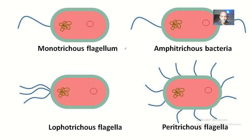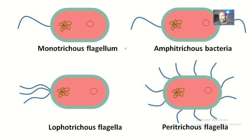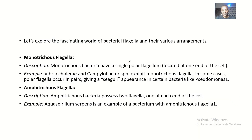We have the monotritus flagellum — bacteria having just one flagellum. We have the amphitritus, which is having one flagellum on both sides. Then we have the lophotritus, having many flagella but on the same side. And we have the peritritus, which has flagella all around it.